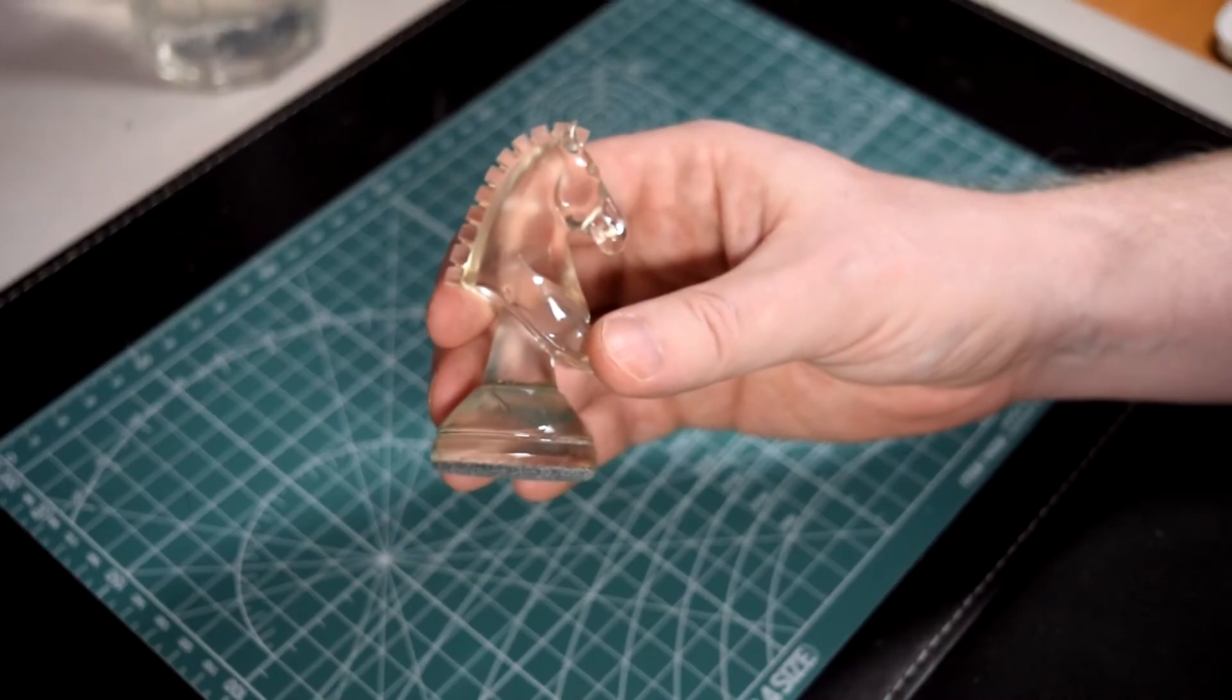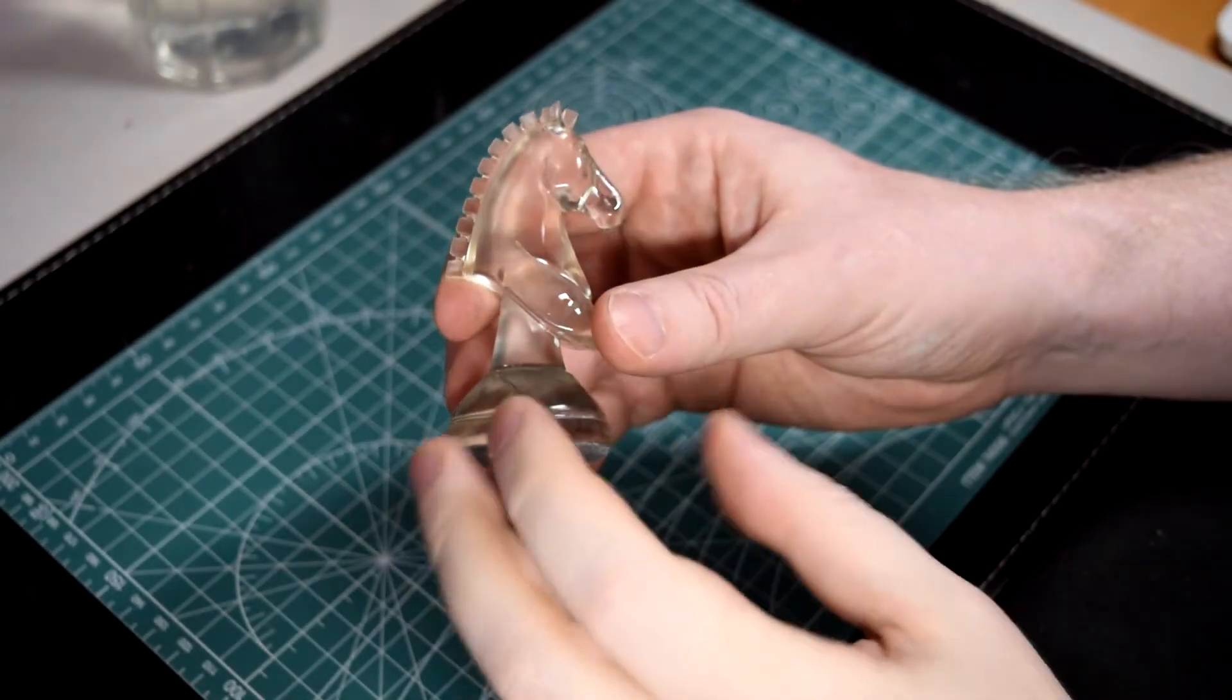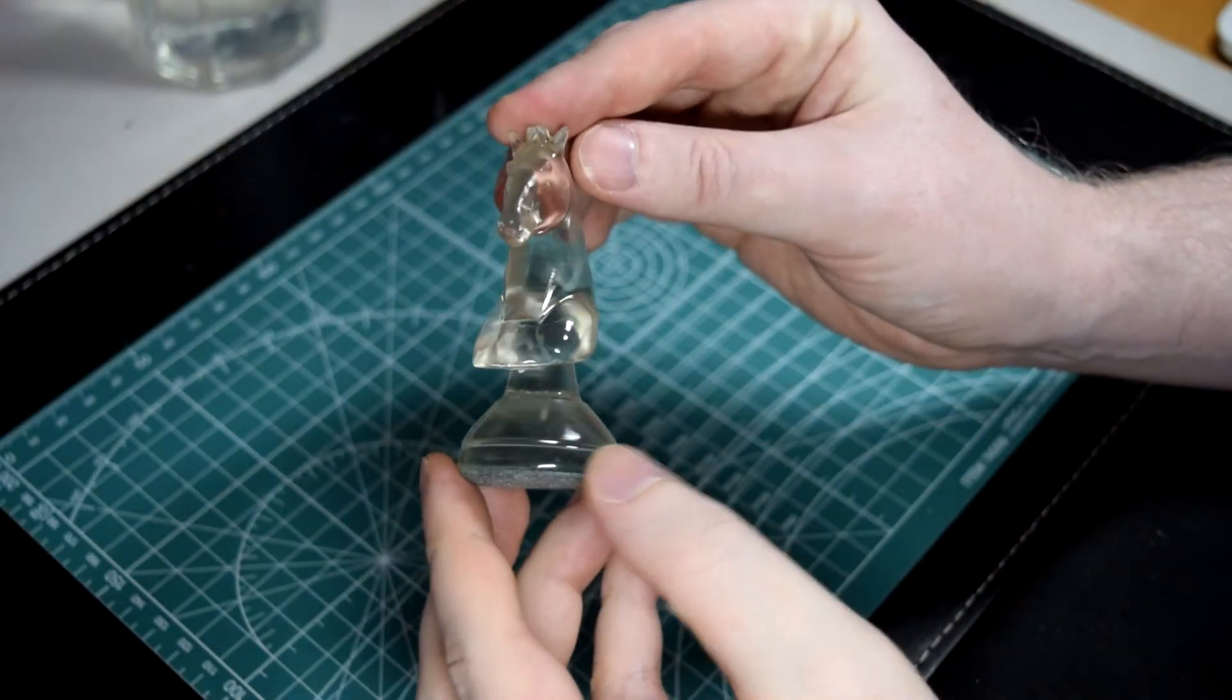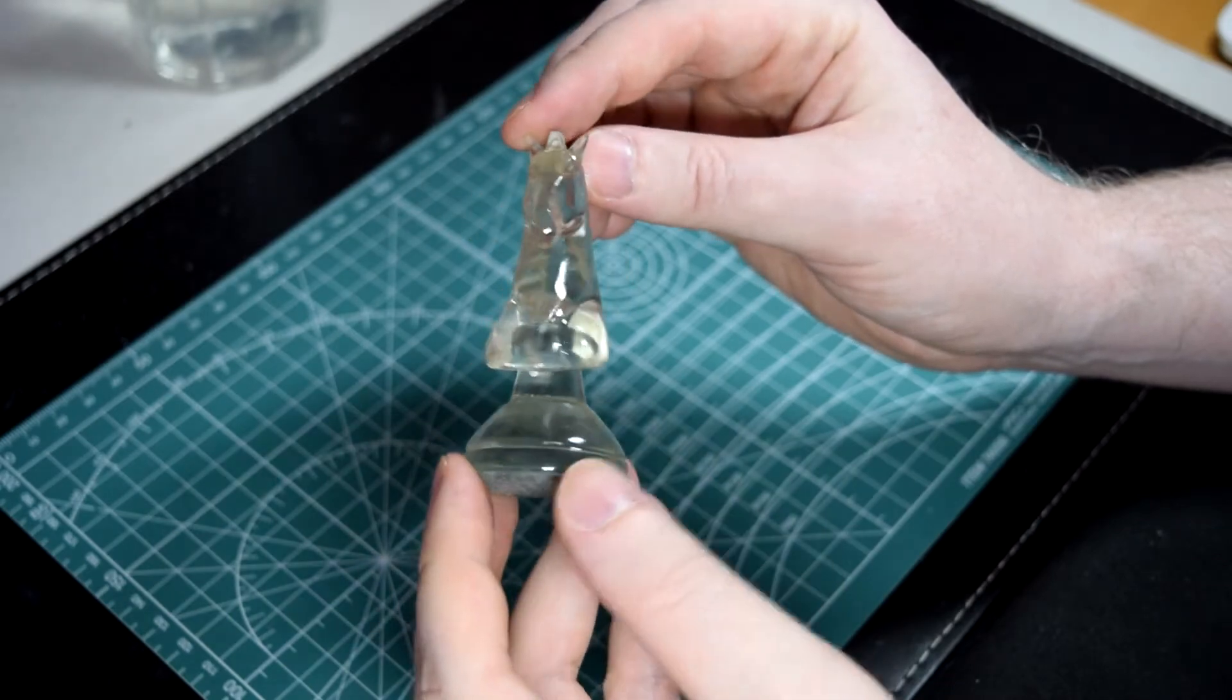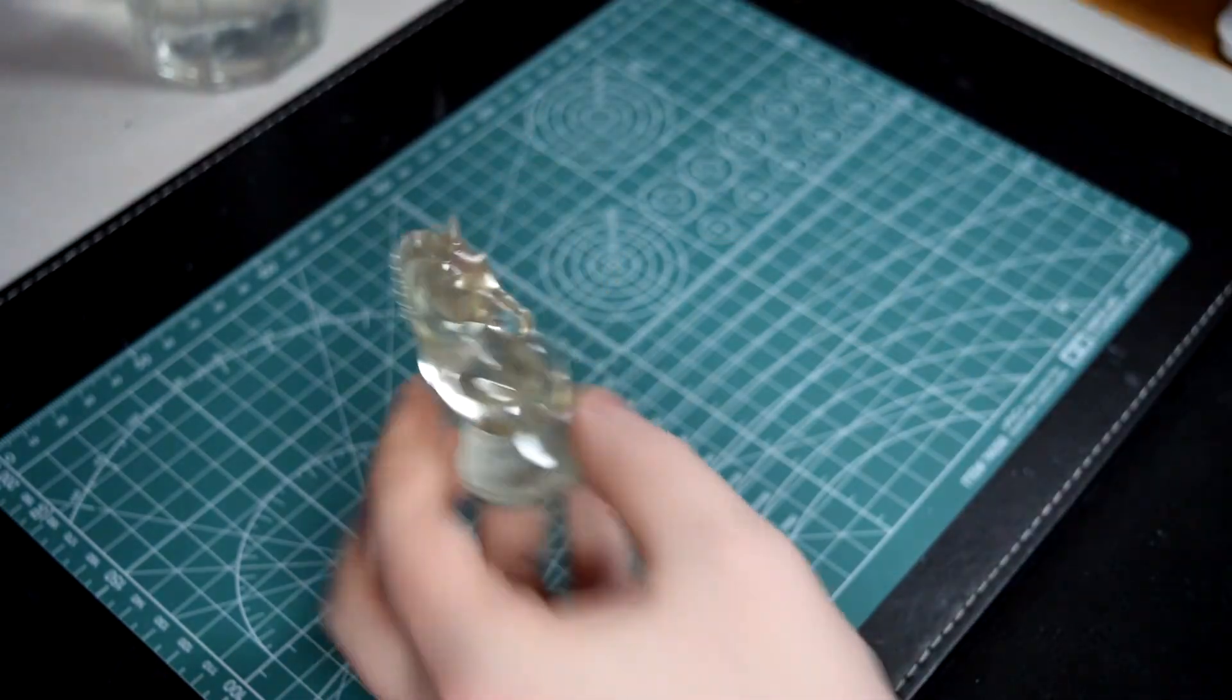Next I'm going to show you how to get transparent resin. As you can see, this piece is quite clear, you can see through it, and it's very shiny.